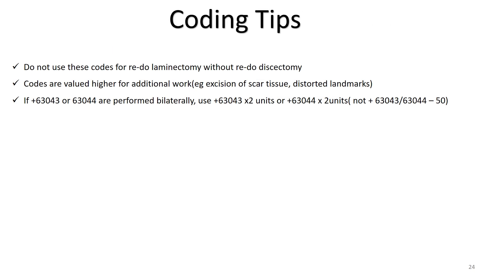A few coding tips for redo discectomies. Do not use these codes for redo laminectomies if a redo discectomy is not performed. These codes are valued higher for additional work, so it's important to state in your op note that there was excision of scar tissue, distorted landmarks, or whatever challenges you experienced approaching the disc. If 63043 or 63044 are performed bilaterally, use 63043 times 2 units or 63044 times 2 units, and not 63043 or 63044 with modifier 50.